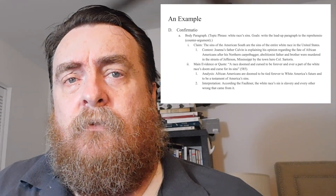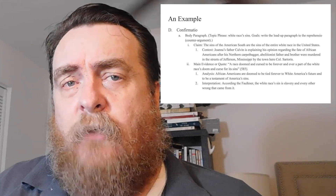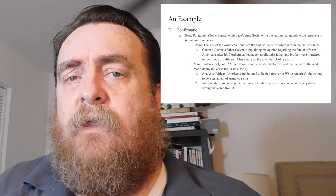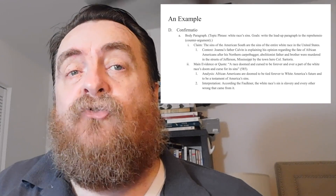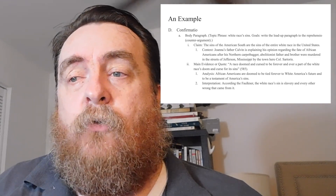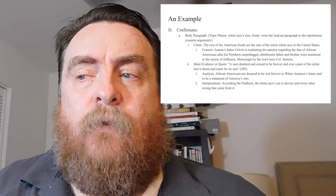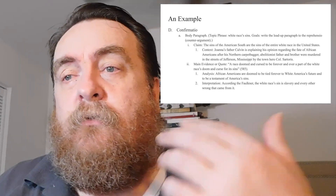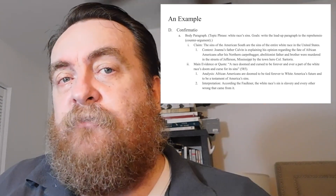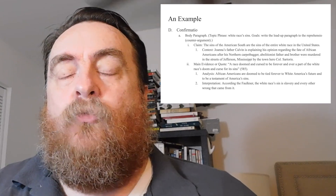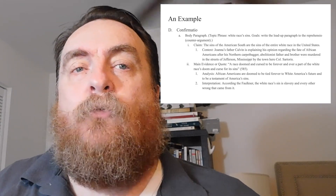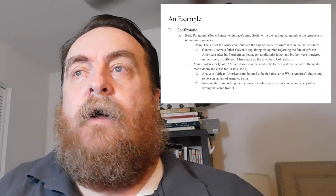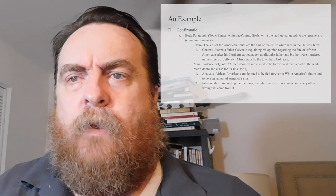You've already done a lot of the work for this — it's in your double entry journal. This is how you're going to arrange things. The one thing that is here that is not in the double entry journal is the interpretation. This is text that you intend to go in your paper. So I have: 'according to Faulkner, the white race's sin is slavery and every other wrong that came from it.' So you can see what's happening: context, analysis, interpretation already built in. After this outline is complete, there are really only two things still left to be done — the topic sentence and the transition sentence. You don't need to outline those, but have a direction you're planning on going already.